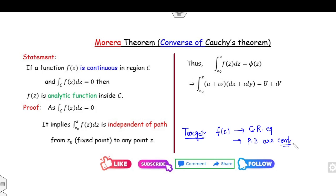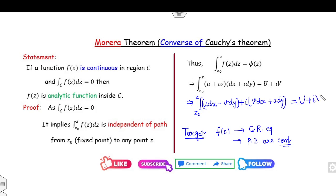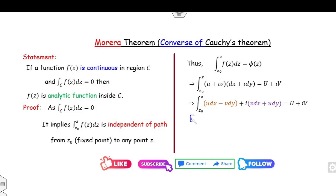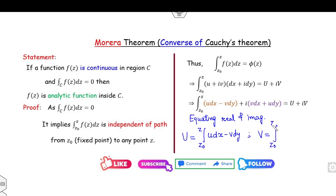Your target is to prove f(z) satisfies the Cauchy-Riemann equations and that their partial derivatives are continuous. Opening the bracket, the integral becomes: the real part is ∫(u dx − v dy), and the imaginary part is i times ∫(v dx + u dy). Equating real and imaginary parts: capital U = ∫(u dx − v dy) from z₀ to z, and capital V = ∫(v dx + u dy) from z₀ to z.